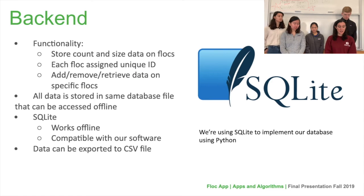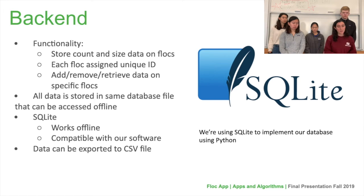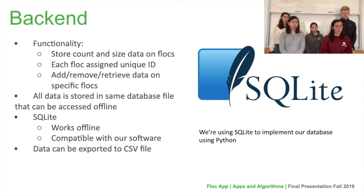In the back-end, the way we stored all of the information was using a database called SQLite. We decided on SQLite because it works well offline, and our concern was that plant operators may not have reliable access to Wi-Fi, making the process significantly easier, safer, and more efficient. The purpose of this database is to store the count and size of the flocks, and each flock is assigned a unique ID. This database has the ability — which we wrote ourselves — to add, remove, and retrieve the data of specific flocks. We added the export functionality to allow communication between the front-end and the back-end and for a plant operator to be able to access what is in the back-end.